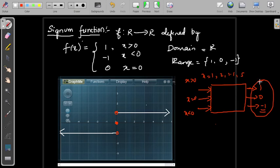So the range is nothing but all possible outputs, which is 1, 0, minus 1. And domain means all possible inputs: positive, negative, and including 0.